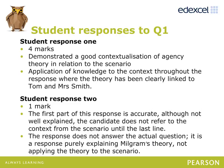Student response 1 has demonstrated a good contextualisation of agency theory in relation to the scenario in the question and has been awarded 4 marks, all of which are AO2 marks for the application of knowledge to a context, evident throughout the response where the theory has been clearly applied to Tom and Mrs Smith. While the first part of student response 2 is accurate, although not well explained, the candidate does not refer to the context from the scenario until the very last line. This has resulted in a low mark, as the response does not answer the actual question — it is a response purely explaining Milgram's theory, not applying it to the scenario as asked. This has therefore been credited with 1 mark. Part 1b is correct for 1 mark. The response to Part 1c shows that the student has not understood the data, as they refer to falling incomes and falling car sales.